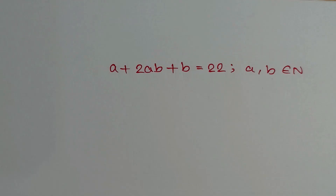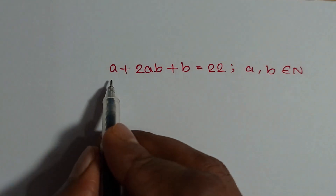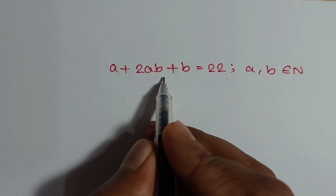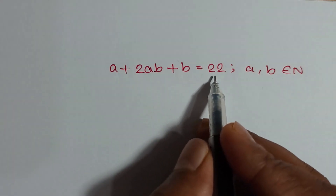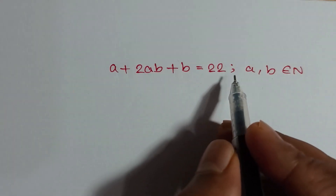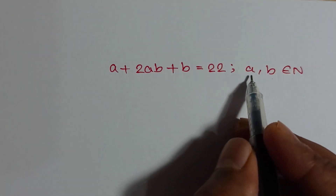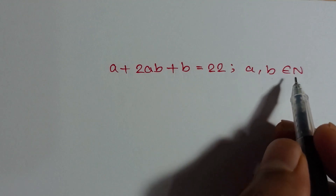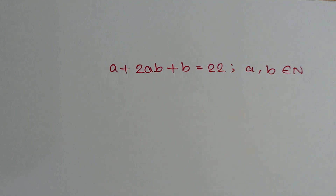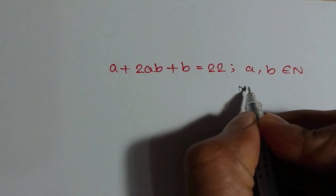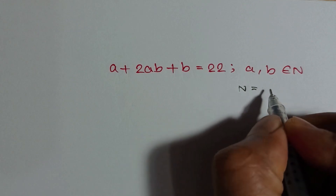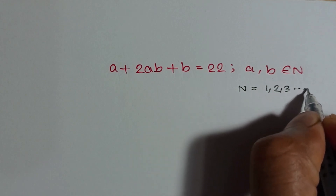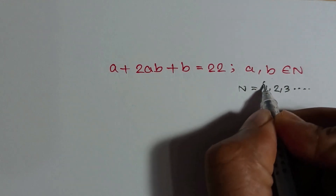Hi everyone, we have given a² + 2ab + b² = 22, and a and b are natural numbers — meaning positive integers — where n is equal to 1, 2, 3, up to infinity.